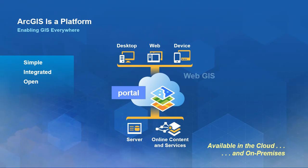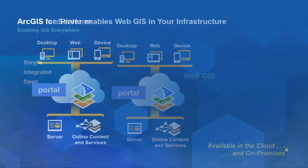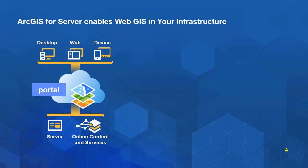A portal is your central destination within your organization for all GIS assets and resources, and it's only useful if it has data content and is powered by GIS servers. You can deploy this pattern on your own physical machines or in the cloud — private cloud or ArcGIS Online. Let's take this diagram and break it down to something tangible. What are the different pieces that I get?